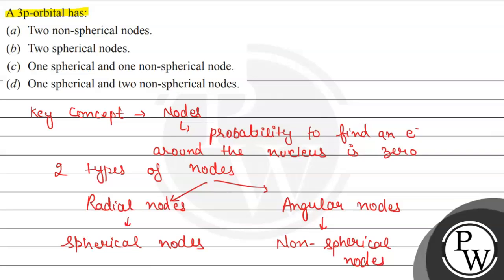Radial nodes are termed as spherical nodes. As the name suggests, they refer to a spherical surface around the nucleus where the electron find probability will be 0. Non-spherical nodes refer to the planar area around the nucleus where the electron find probability will be 0.